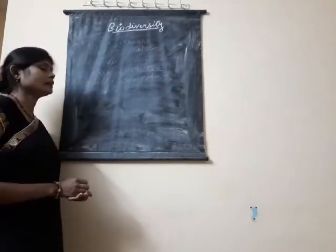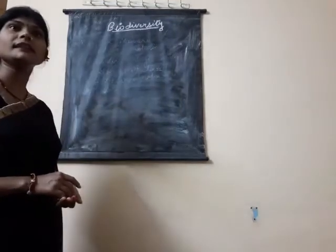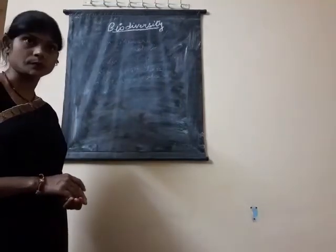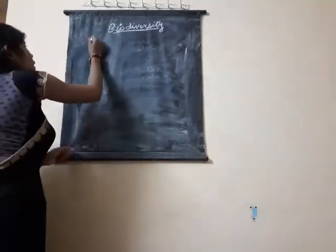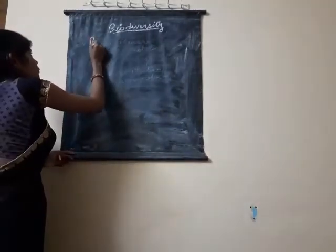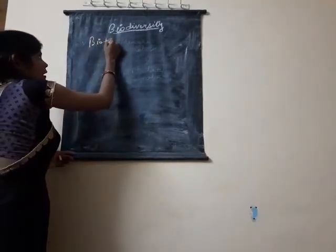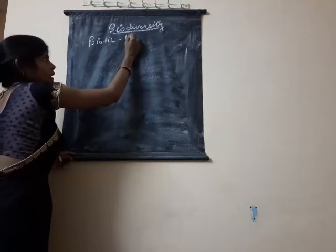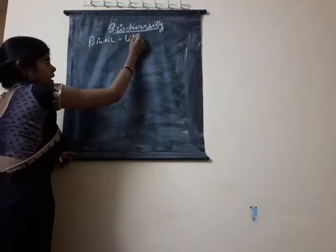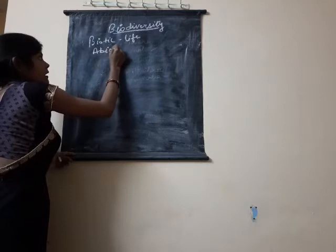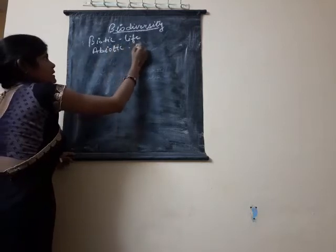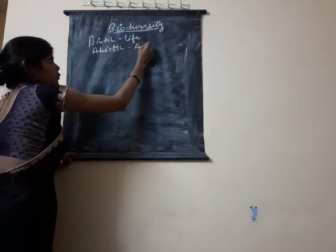Diversity means all the abiotic and biotic factors living in the same ecosystem. Ecosystem means our surrounding. Biotic means the organisms which have life, and abiotic means non-living things like air, sun, water, etc.